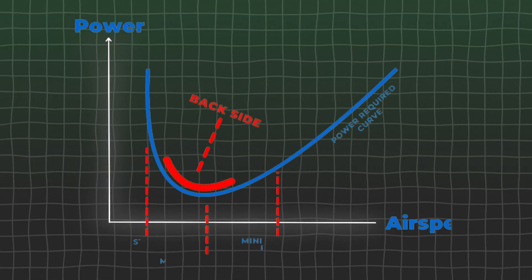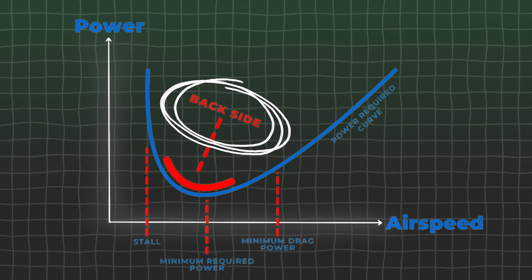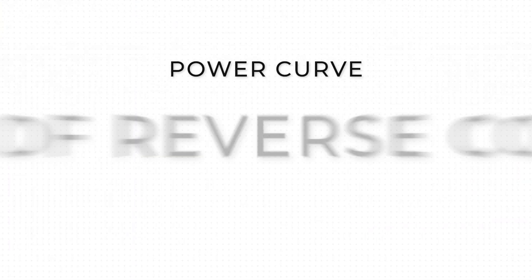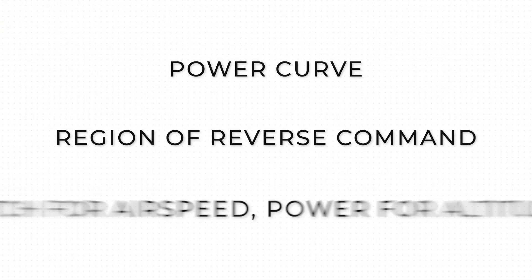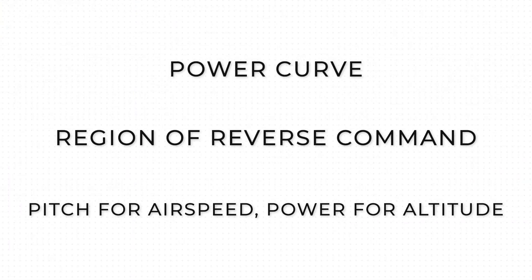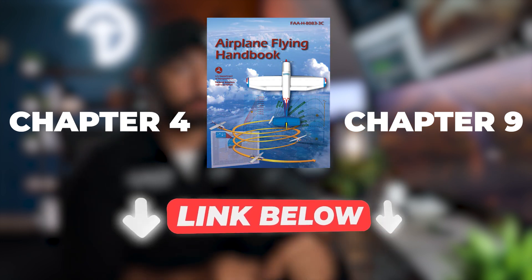We need to do this when we are on the backside of the power curve, which puts us in the region of reverse command. In this video, we're going to break down the power curve, what the region of reverse command means, and how to properly use pitch for airspeed and power for altitude in various scenarios. If you'd like an even more in-depth dive into these topics, check out chapter four and chapter nine of the Airplane Flying Handbook linked below.